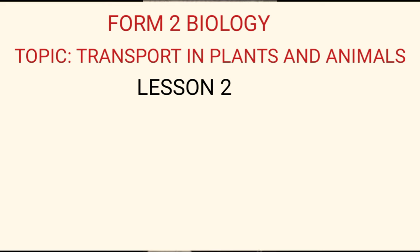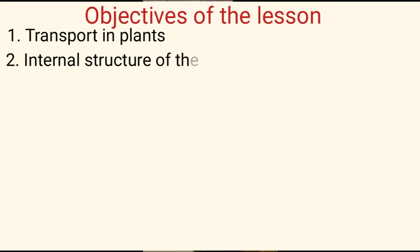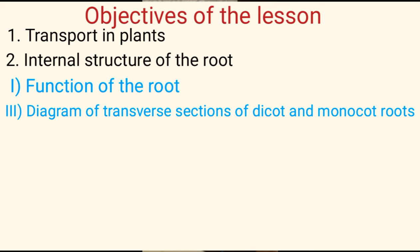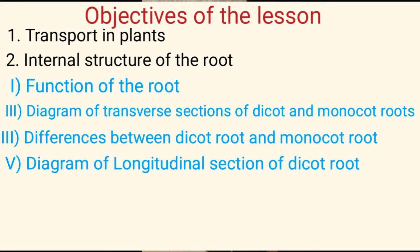Welcome to our channel. In a previous biology lesson on transport in plants and animals — lesson one — we talked about the definition of transport, importance of transport, and transport in lower and higher organisms. In this lesson, we will talk about: transport in plants, the internal structure of the root, diagrams of transverse sections of dicot and monocot roots, a comparison of differences between them, and the diagram of the longitudinal section of a dicot root, including the function of the various parts of the root.